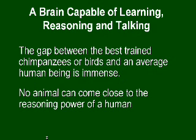No animal can come close to the reasoning power of a human. The English language alone has over a million words. How many words can an animal speak? They may go bow-wow or meow, and they can imitate some sounds, but they don't really know what they're saying — they're just imitating. They don't have reasoning power, they don't have grammar — nouns, verbs, adjectives, adverbs — and they can't reason at all close to a human.